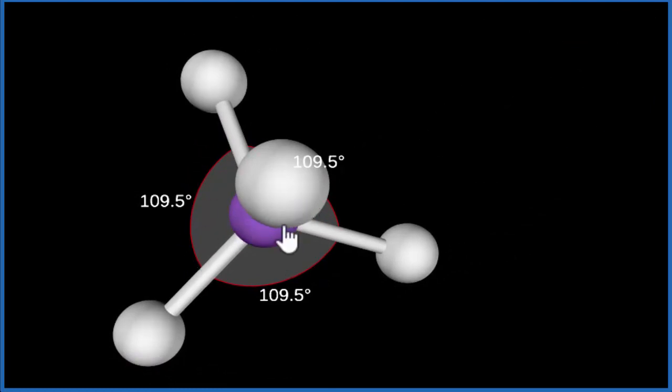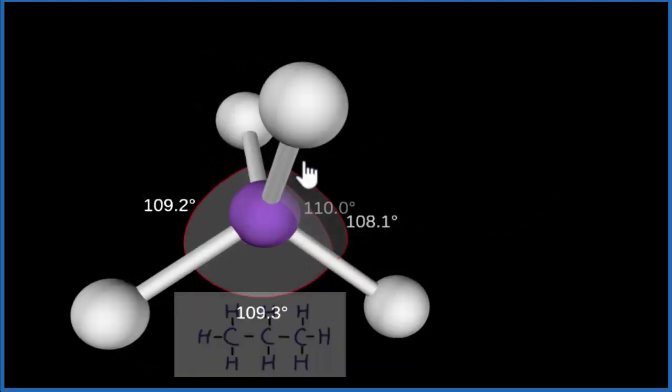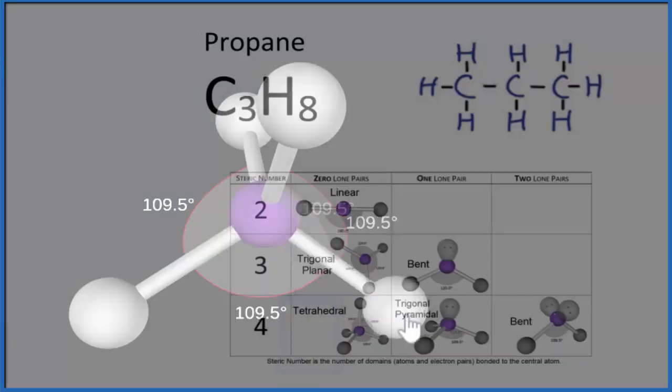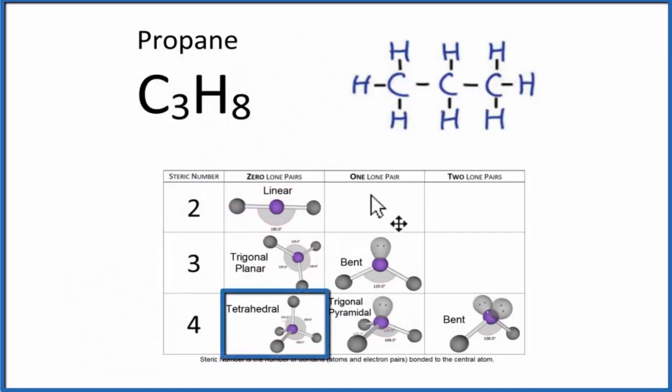We have bond angles of 109.5 degrees. So you can imagine here's the CH3 group, here's the two hydrogens, and here's the other CH3 group. So that means we have a tetrahedral molecular geometry for the carbon here and that would look like this.